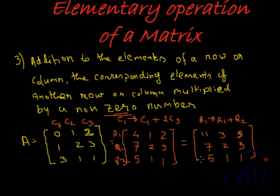So what we have learned is we can perform operations on a given row or a given column and keep the nature of the matrix the same. We will see in the next video how to use elementary operations of a matrix to arrive at the inverse of a matrix. Thank you, keep watching MathSmart — subscribe to MathSmart to know when we post a new video.